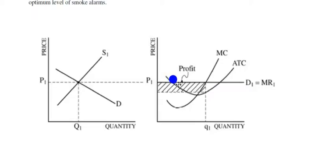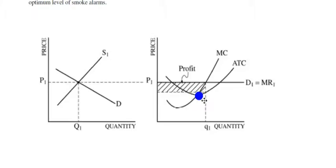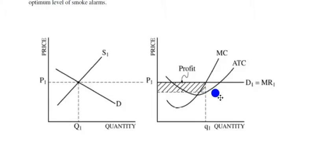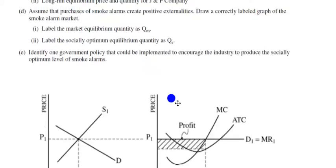Now we draw in our U-shaped average total cost curve. Two important things: make sure your marginal cost curve intersects the ATC curve at its minimum point, and make sure that at the point of production, average total cost is below your price. That gap between price and ATC shows positive short-run economic profits. Then shade that area in.